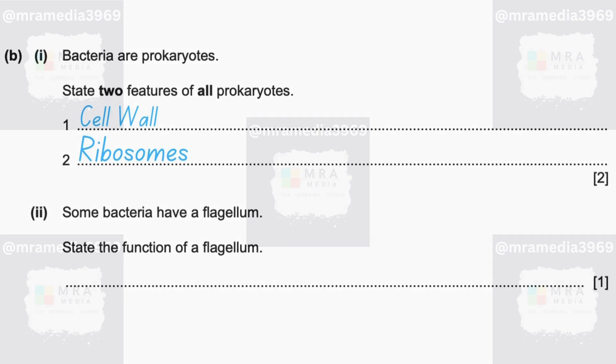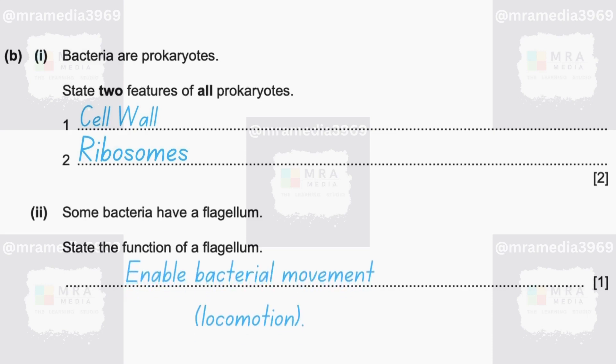Some bacteria have a flagellum. State the function of a flagellum. The main role of the flagellum is to enable bacterial movement, i.e., locomotion.